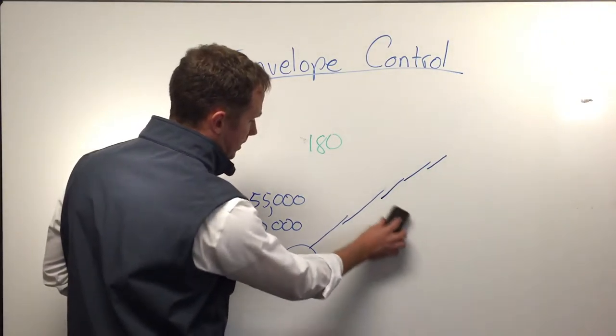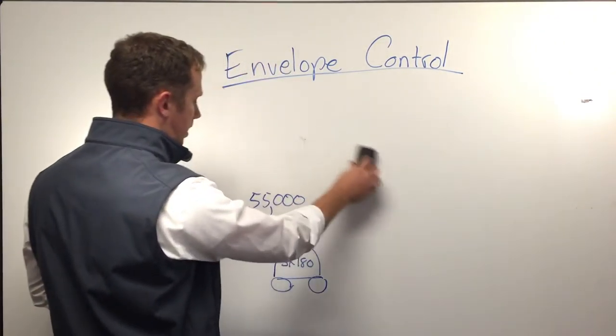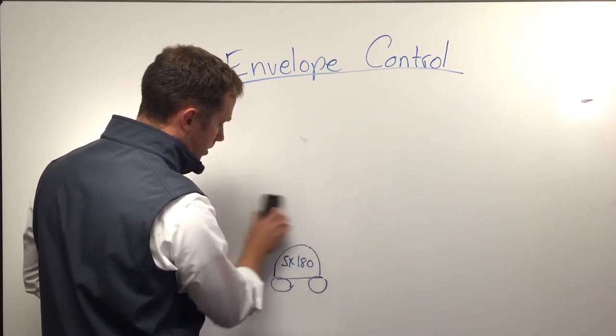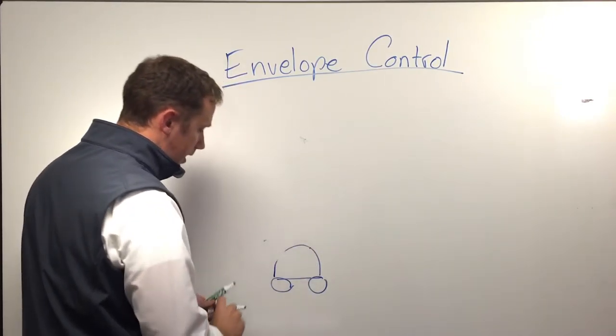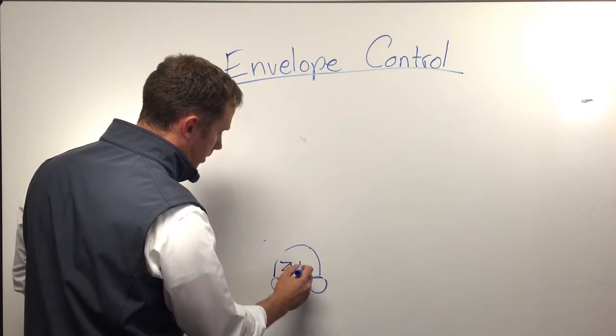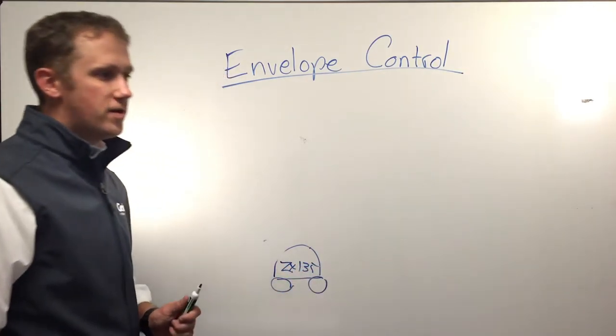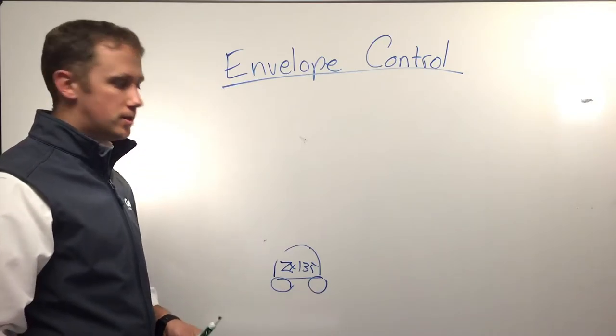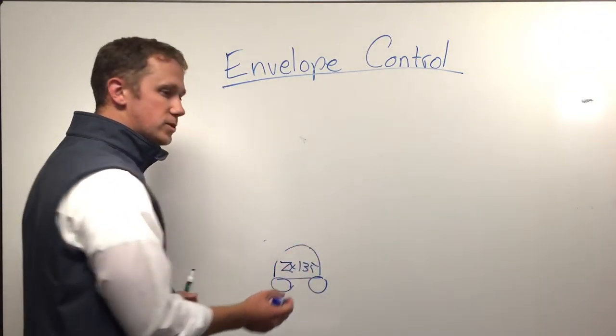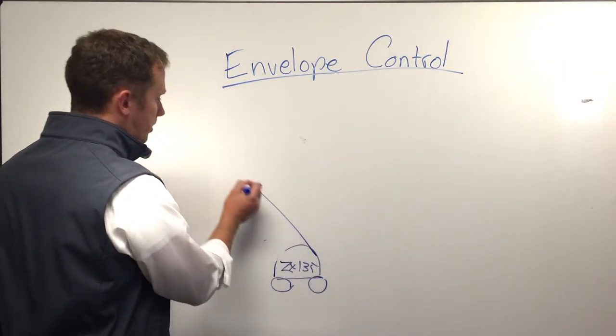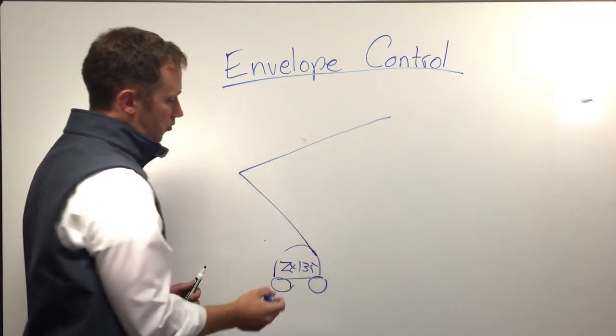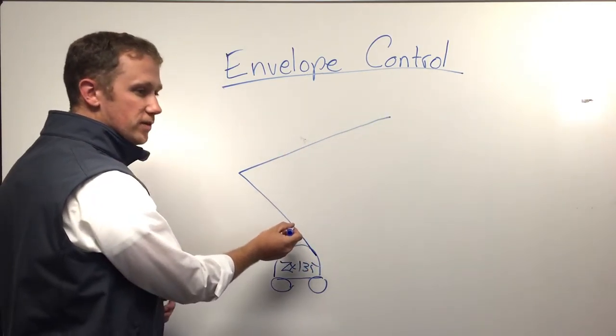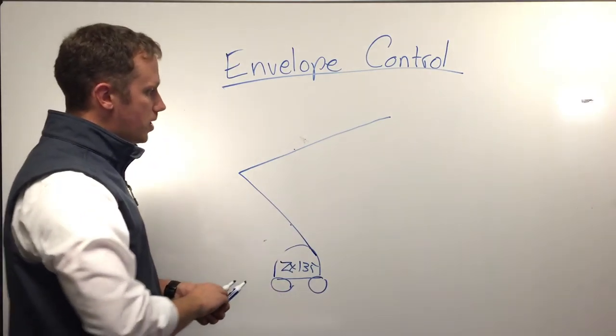Envelope control really takes on a new meaning when we start talking about our Z products. Our ZX 135 is able to achieve industry-leading outreach and up-and-over clearance while again keeping the weight small enough to trailer. With this machine, we use envelope control to control both the position of the secondary and the primary.